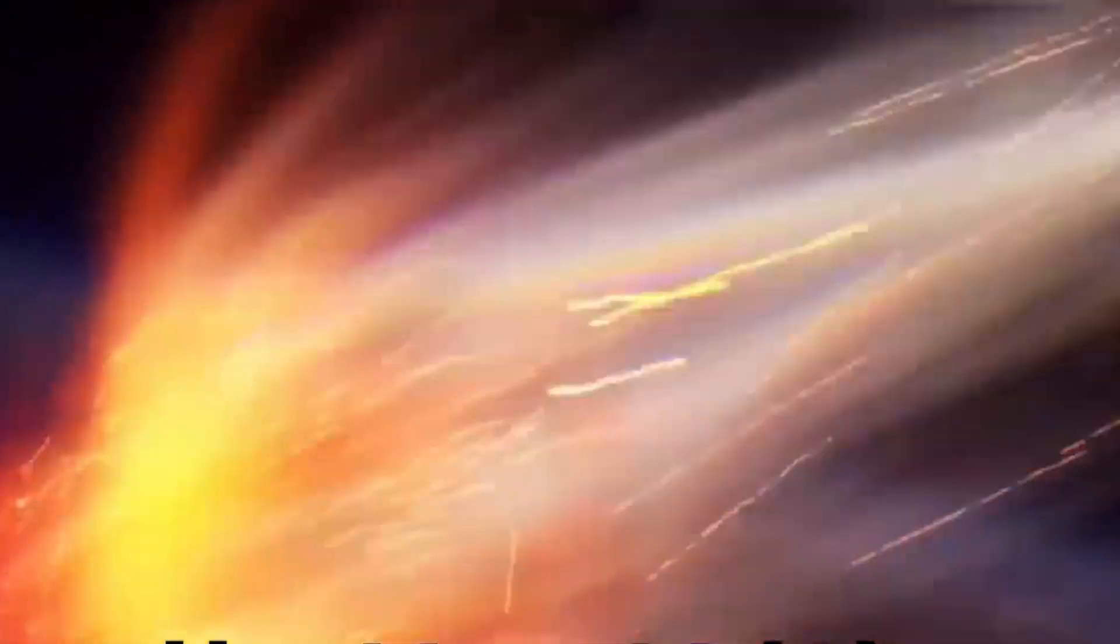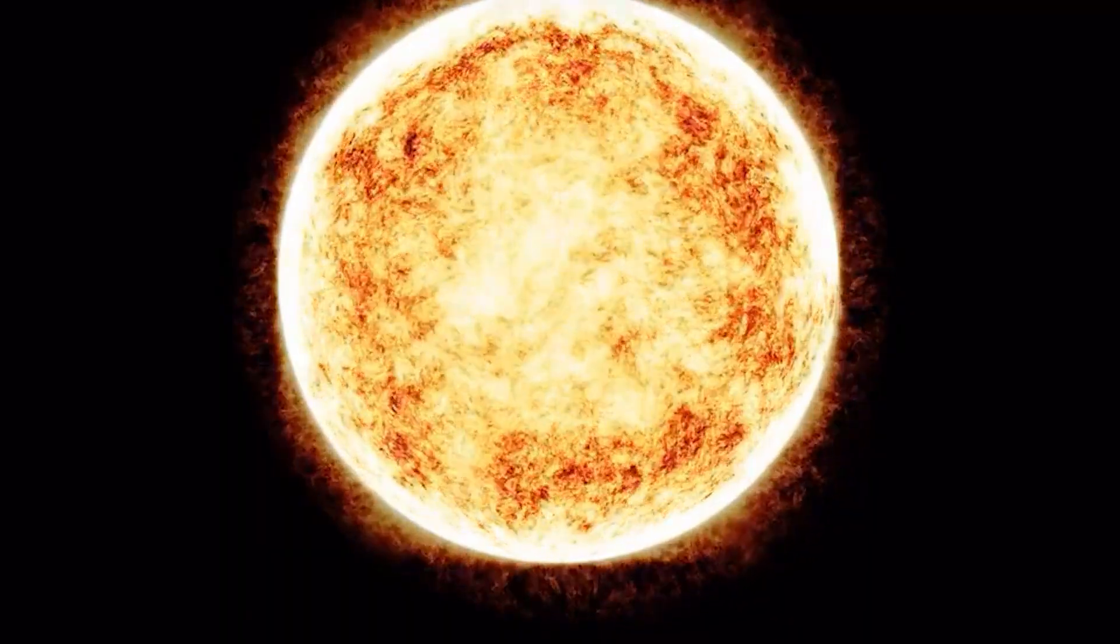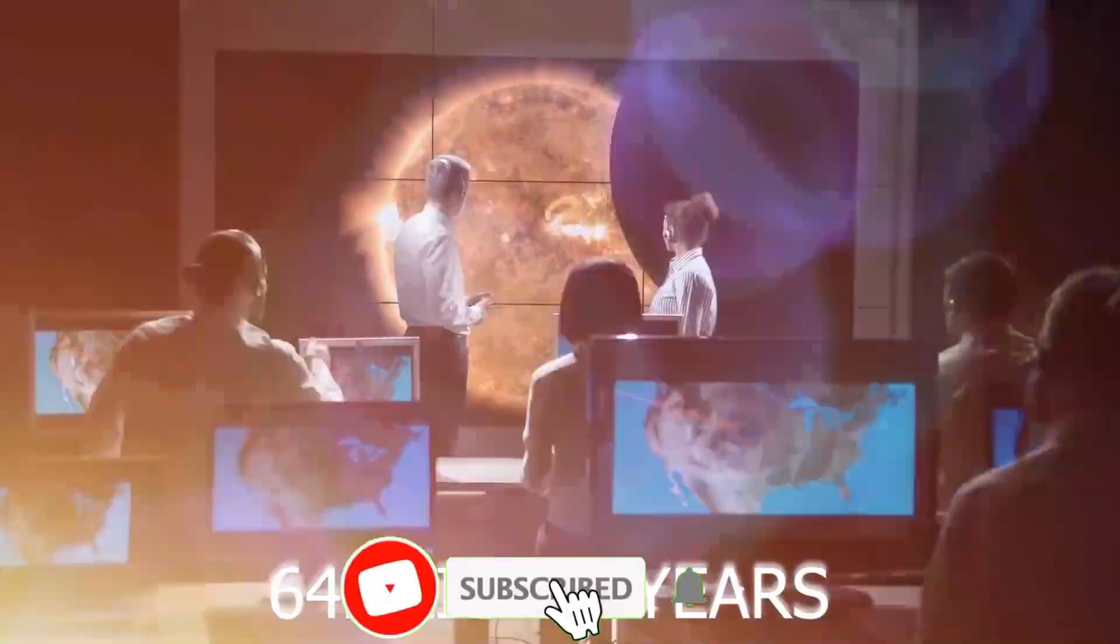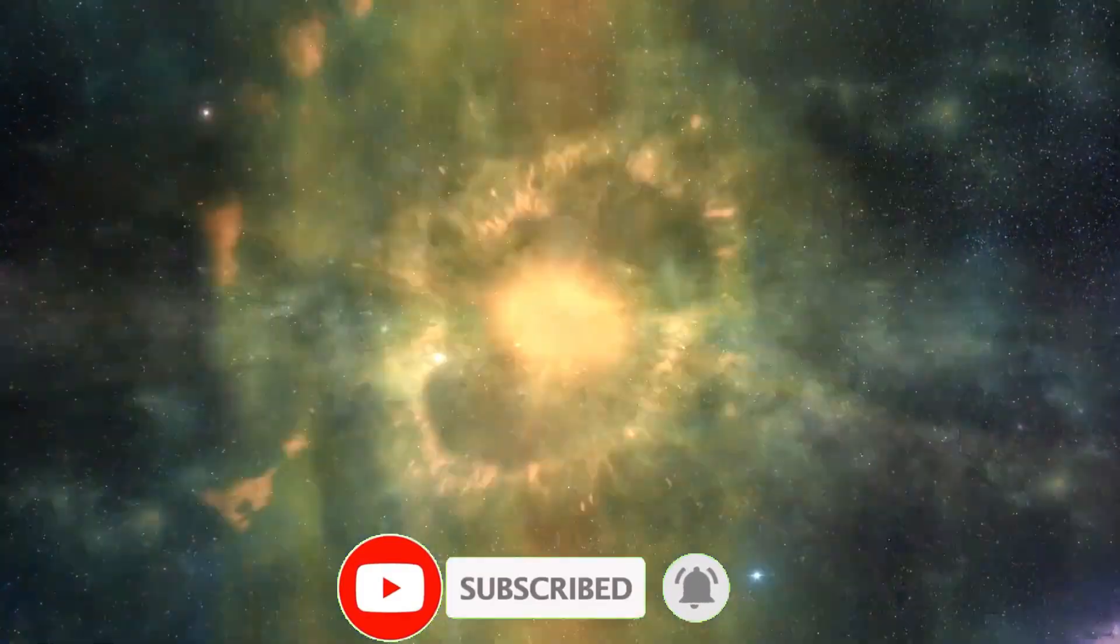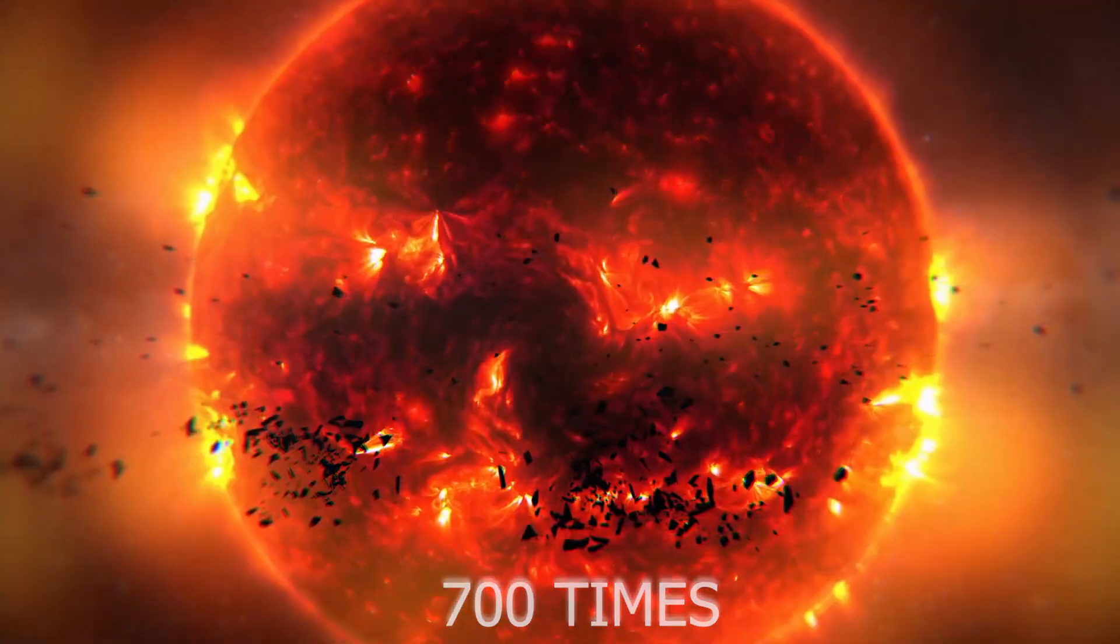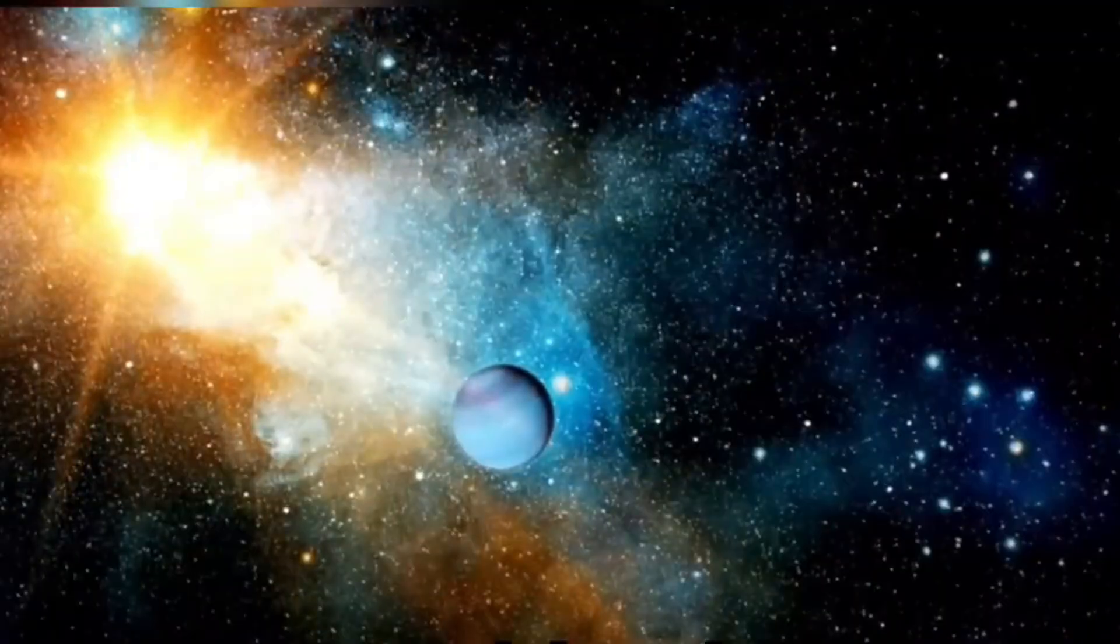Betelgeuse is a red supergiant, a type of star in the final stages of its life cycle. Located around 642 light-years away from Earth, it is one of the largest and brightest stars in the Milky Way, about 700 times the size of the sun and over 10,000 times more luminous.